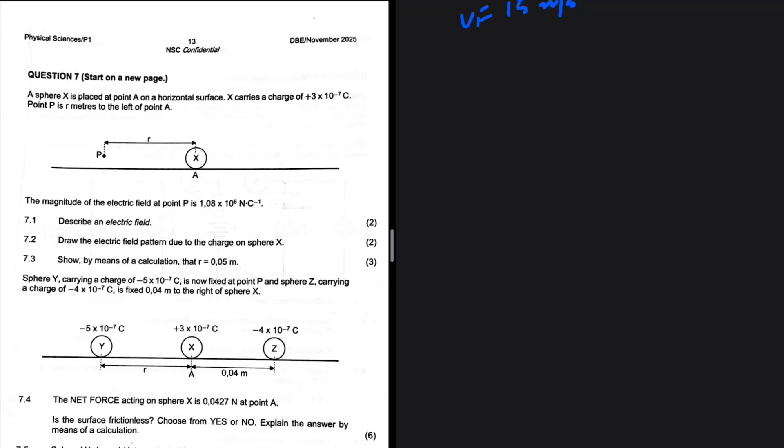Show by means of a calculation that r equals 0.05 meters. So that is 7.3. The assumption is that 7.1 and 7.2 are really easy, no one is really interested in that. So for past papers, if you want the memo to this question without having to watch all the videos...